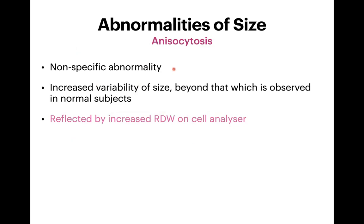Anisocytosis is a nonspecific abnormality defined as increased variability of RBC size beyond that observed in normal subjects. A moderate variation in size is normal, so only variation beyond that is called anisocytosis. It is reflected by increased RDW on the cell analyzer and is an indication to make a peripheral blood smear.